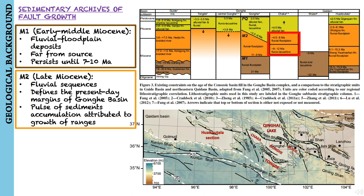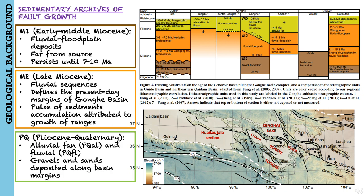Similar facies associations are observed in sections adjacent to the Gonghe-Nanshan. They refer to the various Pliocene-Quaternary gravels and sands deposited on the basin margins as PQ, and the abbreviations PQAL and PQFL distinguish between Pliocene-Quaternary strata interpreted to be deposited in an alluvial fan or a fluvial environment respectively.